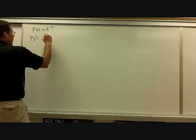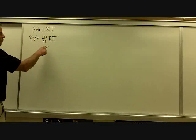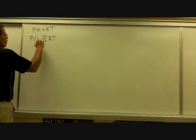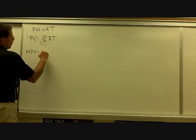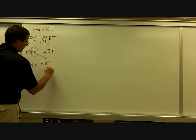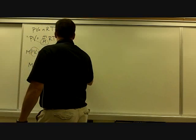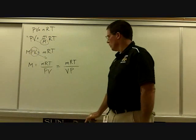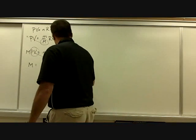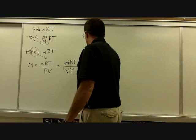PV equals little m over big M times RT. We're looking for molar mass, which is big M. So we move it up: M times PV equals little m times RT, then move PV over so molar mass is by itself. Since we're given density, we can have V and P switch places so we have mass over volume — that's density — times RT over P. You can put parentheses around the density part to help see it; it won't change anything.